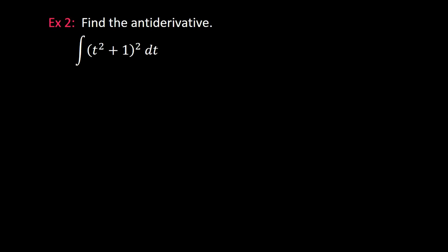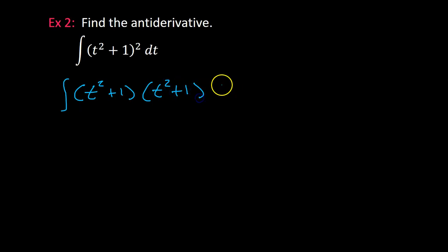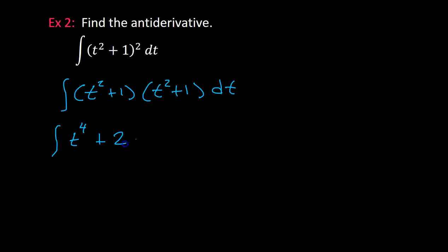Example 2: find the antiderivative of this function. If we were doing the derivative, we would use the chain rule, but we don't have a chain rule for integration. So we actually have to multiply this out the long way. t squared plus 1 squared is the same thing as t squared plus 1 times t squared plus 1. As we multiply, we get t to the fourth power plus 2t squared plus 1 dt.